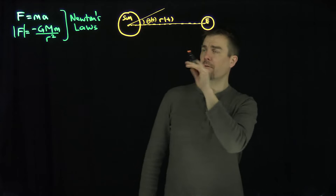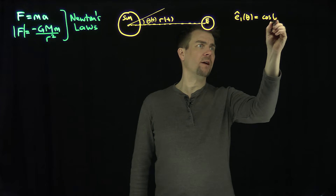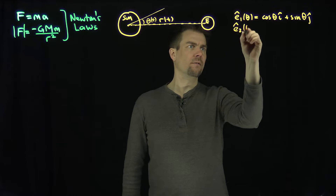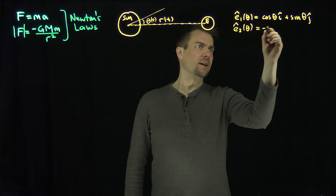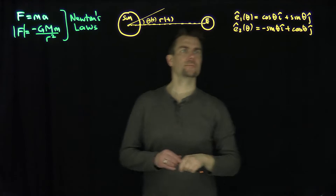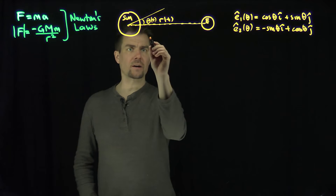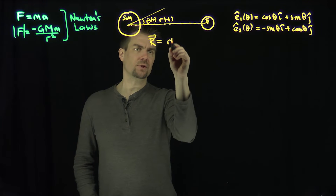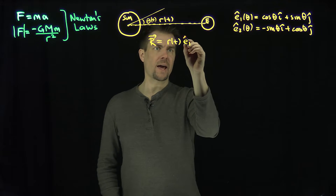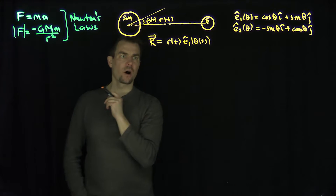To formalize this, I define e1-hat of theta as cosine(θ) î plus sine(θ) ĵ, and e2 of theta as negative sine(θ) î plus cosine(θ) ĵ. Our position vector R satisfies R = r(t) · e1-hat(θ), putting things in polar coordinates, where theta also depends on t.